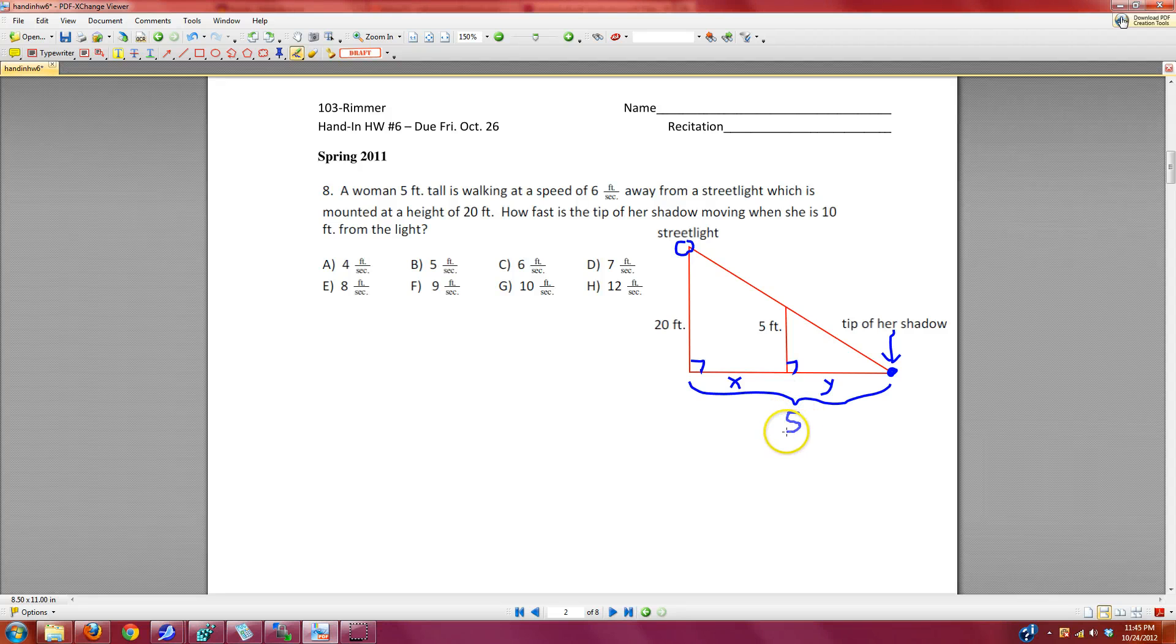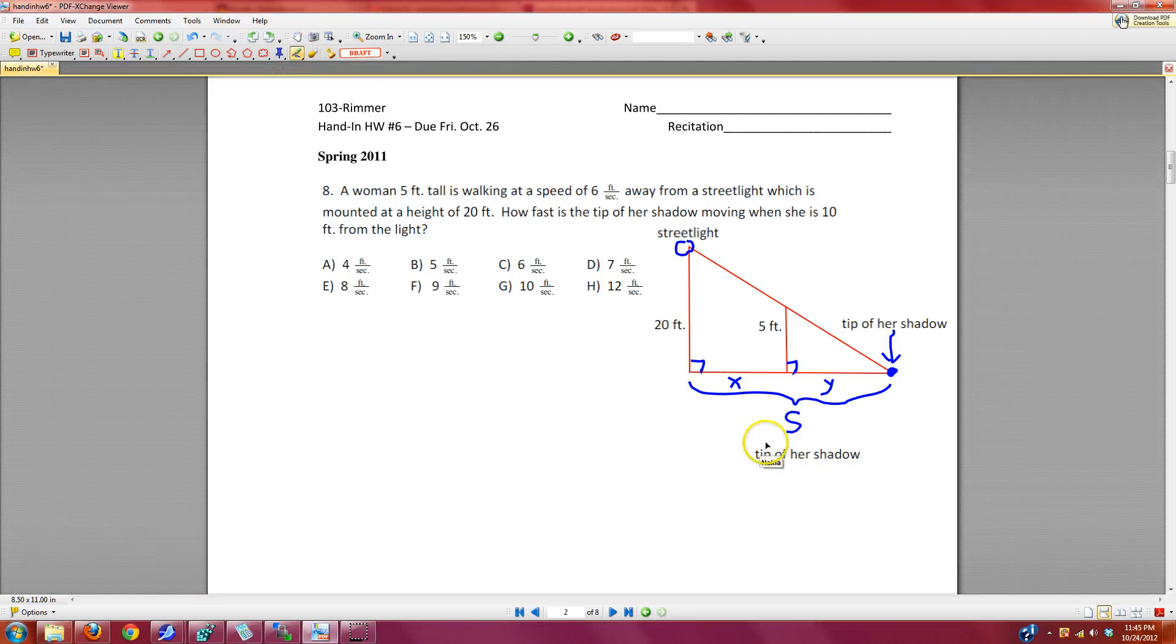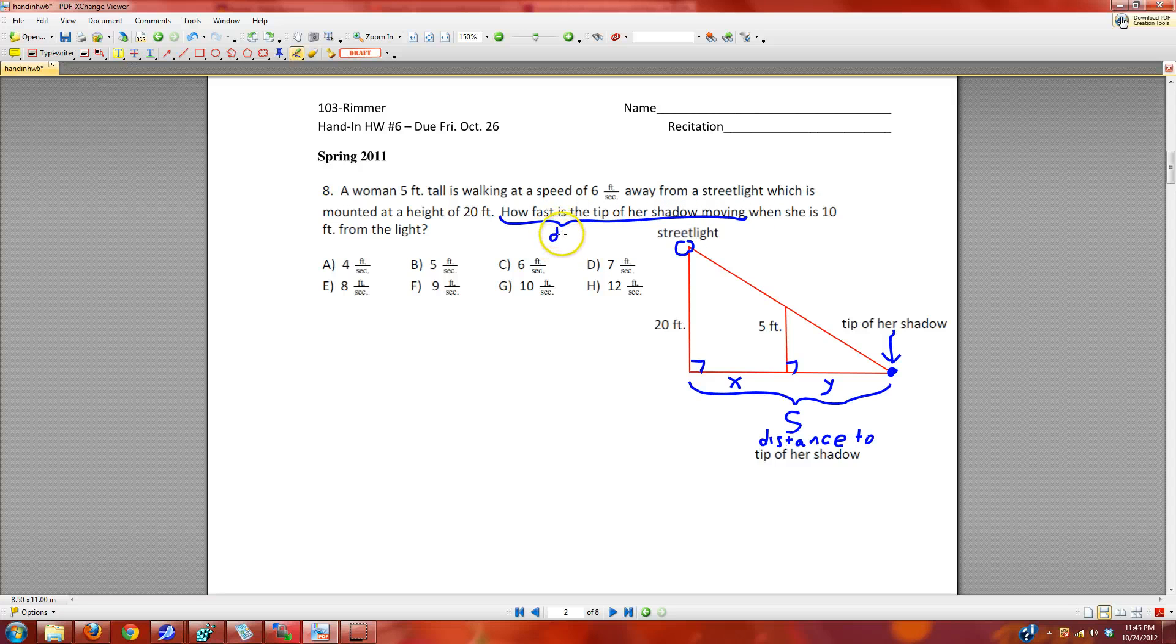It's just like the problem we had done in class. How fast? Call this distance S, the distance to the tip of the shadow. S is the distance to the tip of the shadow. And so, we want to find dS/dt. How fast is the tip of her shadow moving? So, they want us to ask the question, what is dS/dt?